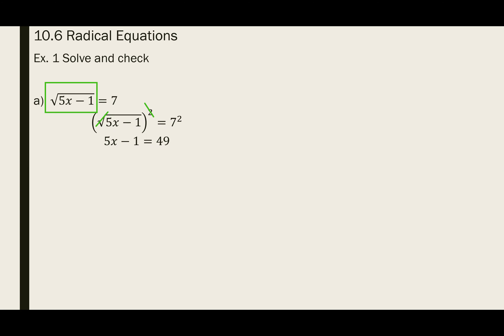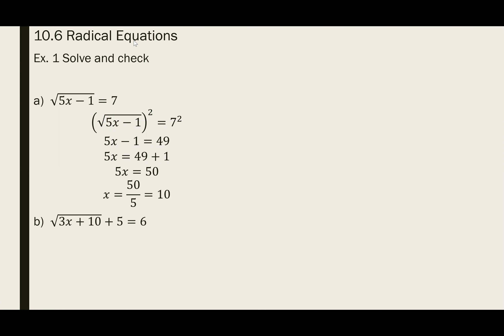Once we get rid of the radical, everything else is the same. How do you get rid of the negative 1? We add 1 to the other side, giving us 5x = 50. How do we get rid of the 5? We divide, and therefore x = 10. If you want to check: 5 times 10 is 50, 50 minus 1 gives you 49, and the square root of 49 is equal to 7.